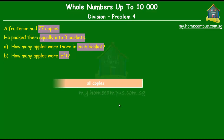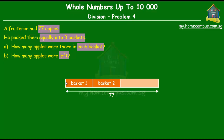Let's make a model diagram for that first. This big unit represents all the apples that the fruiterer had, and they were 77 in number. He packed them equally into three baskets, and then there were some apples that were left. What can we say about the number of apples left? They were too few in number to be divided into three baskets. So the number of apples left will be either zero, one, or two, because one and two are just too few to be divided among three baskets.